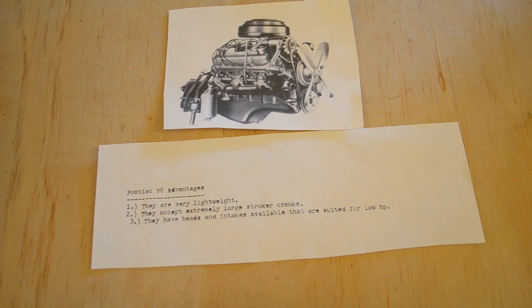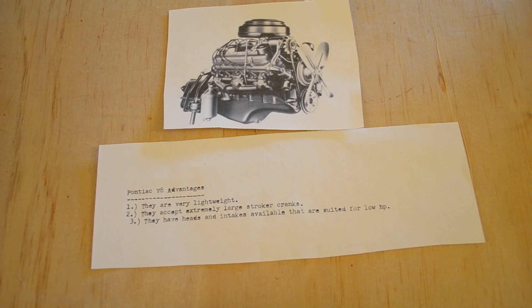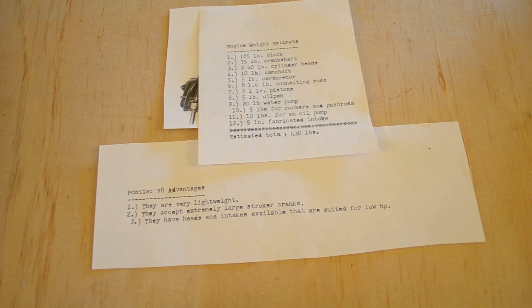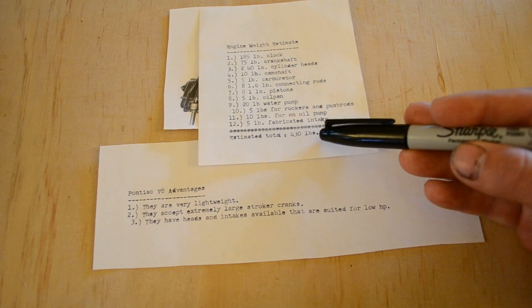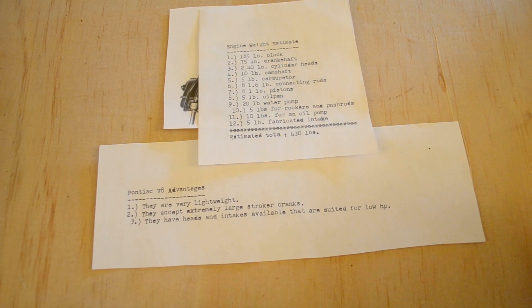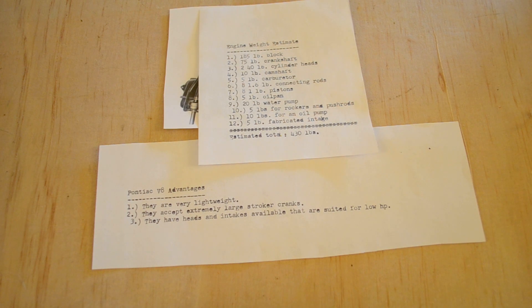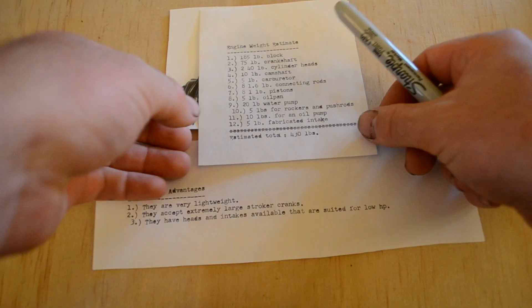The geared Hispano Suiza weighed 500 pounds, and the direct drive version weighed 450. So as long as I can be in that range and not exceed it, I'm doing pretty good for weight. So I put together a list of all of the components that I think I'm going to use, and I got a final total weight of 430 pounds. Now in the real world, it's probably going to be a little bit heavier, but I think this is a pretty good margin of error, and I'm pretty certain I can make it under 500 pounds.